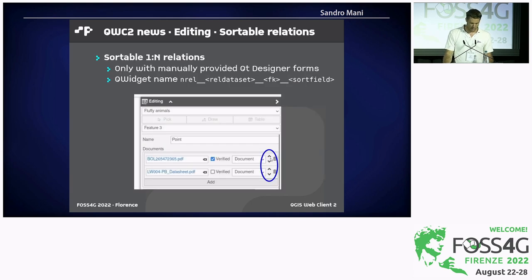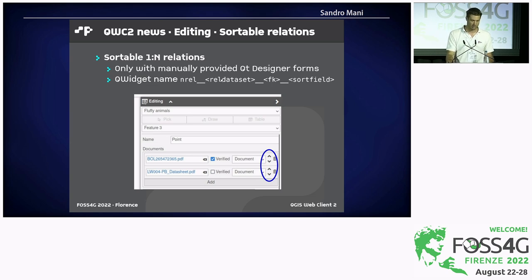Regarding one-to-many relations, we have implemented sorting. When you define a manual QGIS or Qt Designer form, through a special naming convention of the widgets you can define the role of the widget. If you define a sort field, you will get arrows in the one-to-many relation section of the form which allows you to order them.